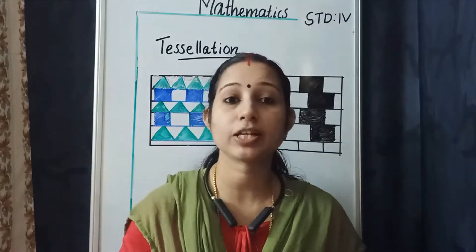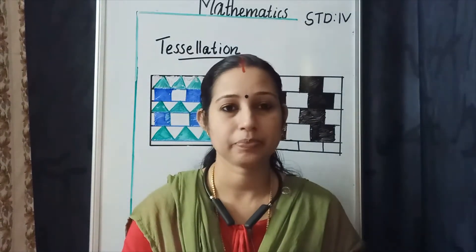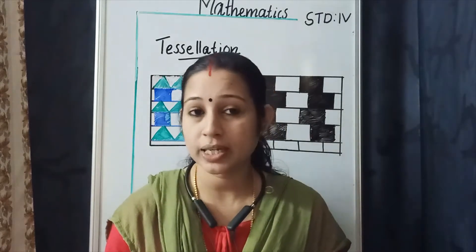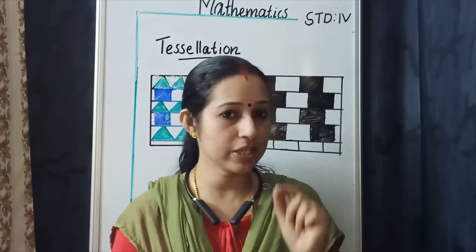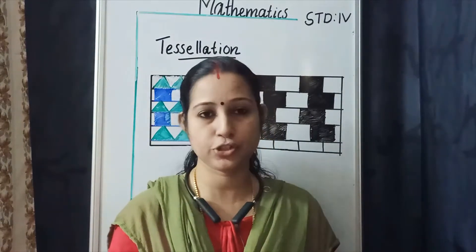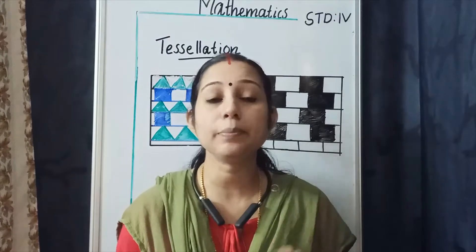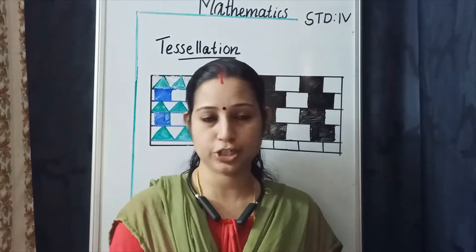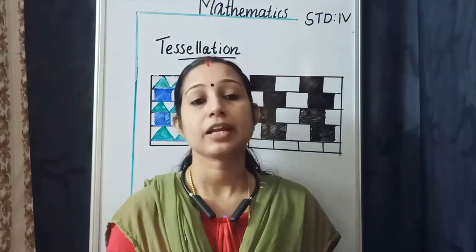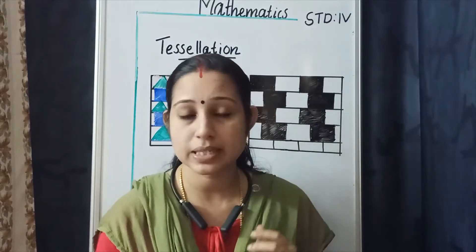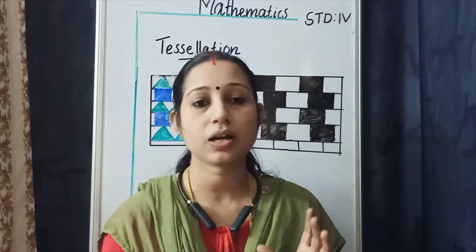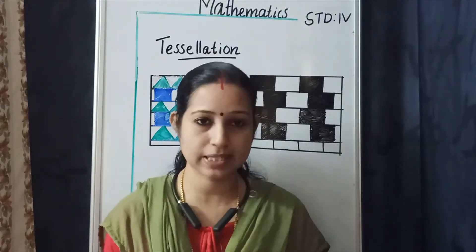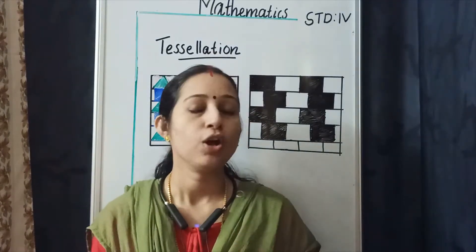What is reflection? When an object is placed in front of a mirror, we see its image. That image is called the reflection. Reflection can be seen in mirrors, water, oil, shiny surfaces, etc.